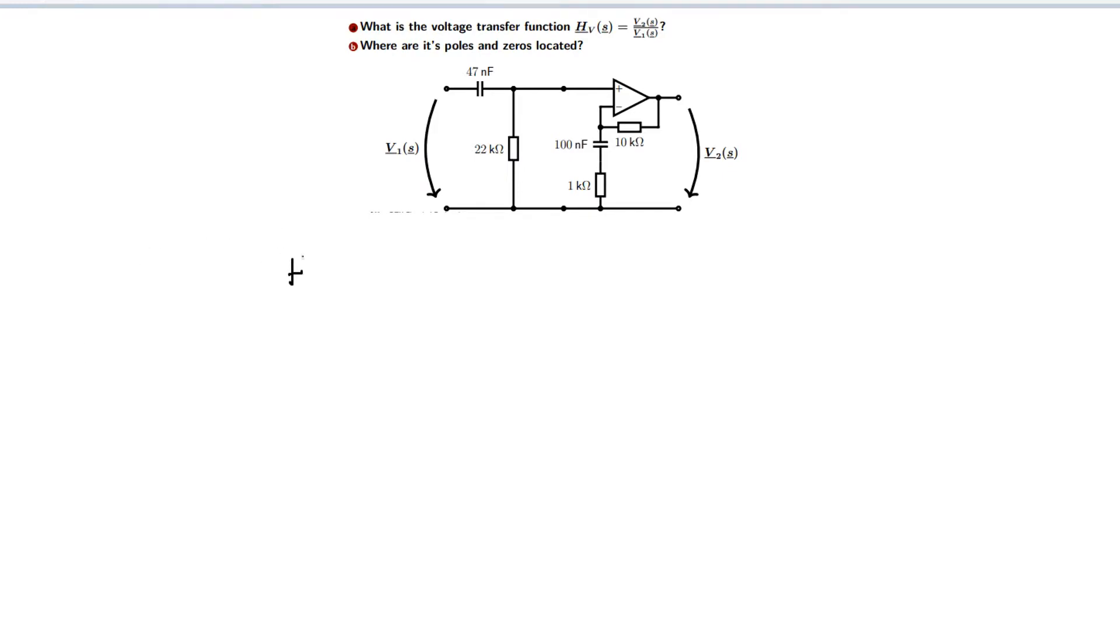The transfer function h is defined as output over input, and in this case the output is v2, the voltage delivered by the op-amp, and the input voltage is v1.